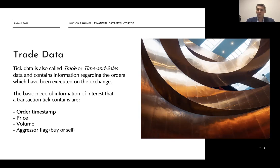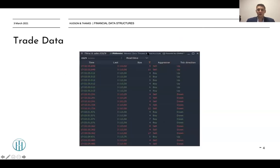Trade data contains usually four fields. The first one is order timestamp, which refers to the time when the order occurred on the exchange. The second field is price, the price at which the order occurred. The third is volume, the size of the order, and the fourth is the aggressor flag — a message from the exchange telling us if the trade was initiated versus bid or ask.